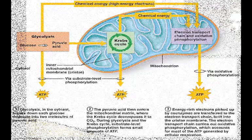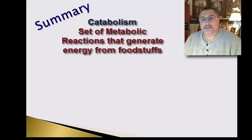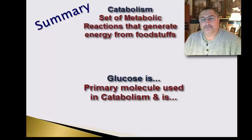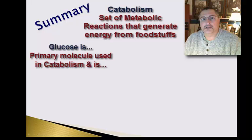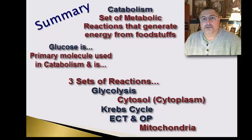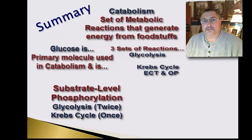In summary: catabolism is a set of reactions in which we break down foodstuffs to generate energy, and it is only about 38% efficient. Glucose is the key molecule utilized in catabolism — it is the blood sugar we talk about in the blood. There are three sets of reactions: glycolysis, the Krebs cycle, and the electron transport chain. Glycolysis occurs in the cytosol; the Krebs cycle occurs in the mitochondrial matrix; and the electron transport chain occurs along the inner lining of the mitochondria, known as the cristae. Glycolysis and the Krebs cycle use substrate-level phosphorylation, while the electron transport chain uses oxidative phosphorylation.